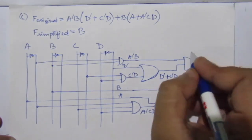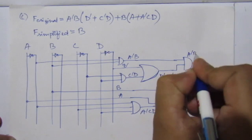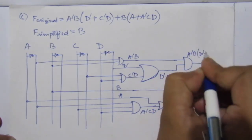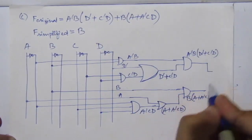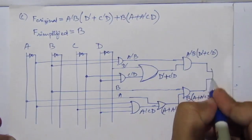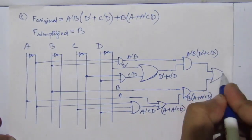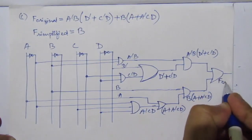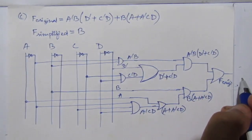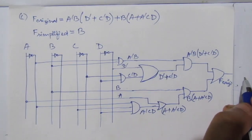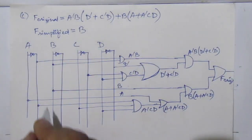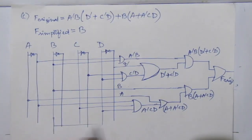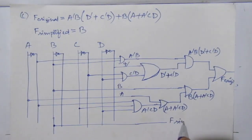Then we have to add these two terms — (ā·b)·(d̄ + c̄·d) and b·(a + ā·c·d) — so use an OR gate to get f original. For the simplified expression, f simplified equals b, so directly draw a line from b. This is f simplified.